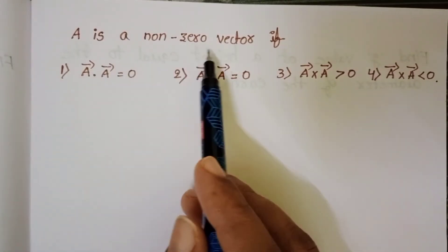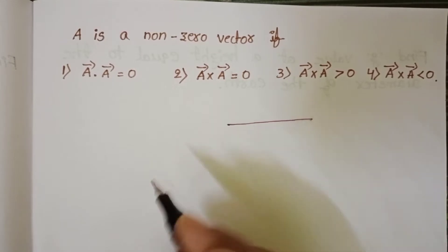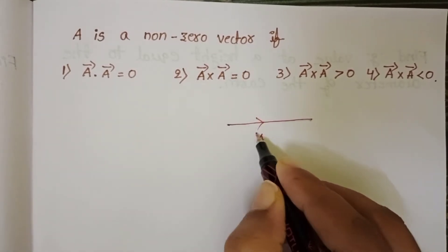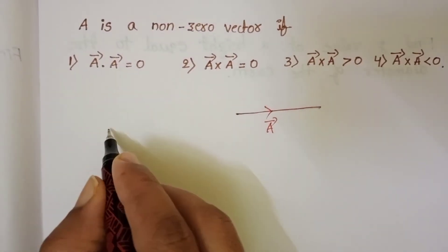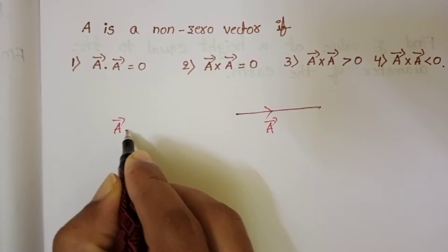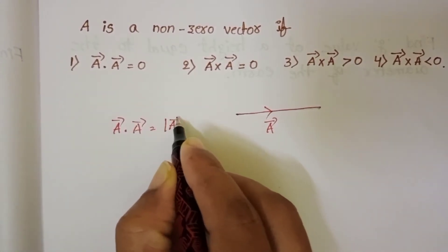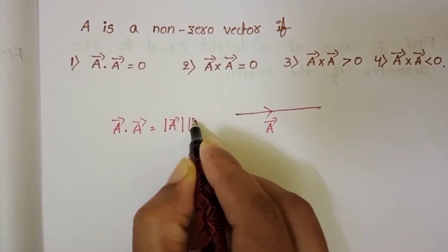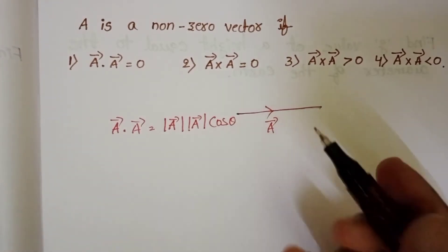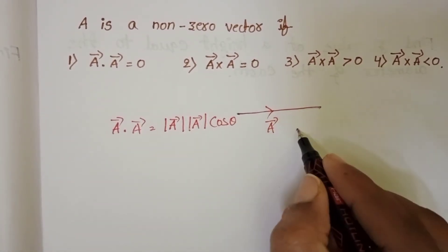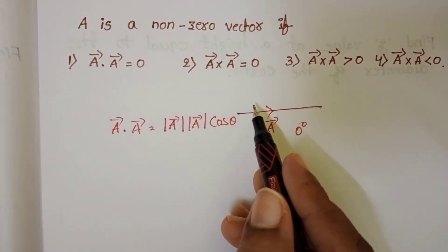A is a non-zero vector. The dot product of a vector by itself, a·a, equals mod(a) × mod(a) × cos(θ). The angle between a vector and itself is 0 degrees, and cos(0°) = 1.